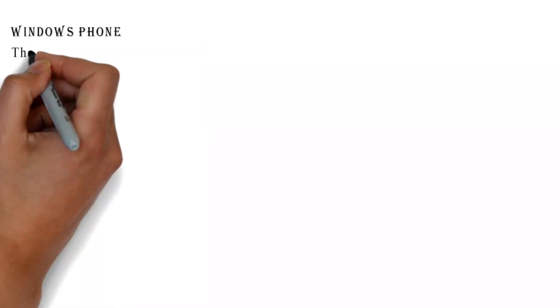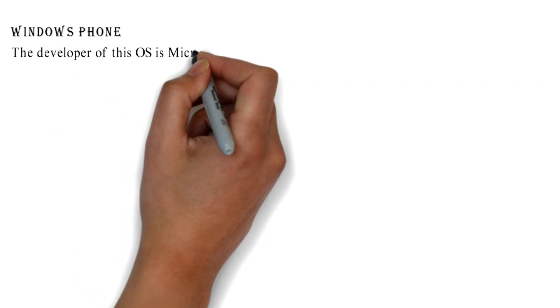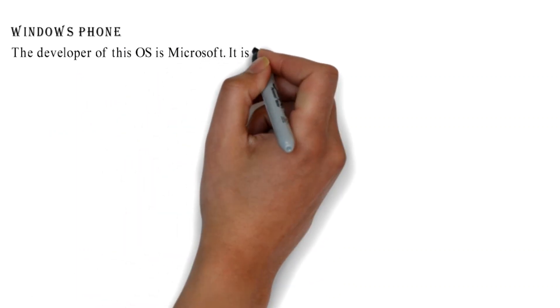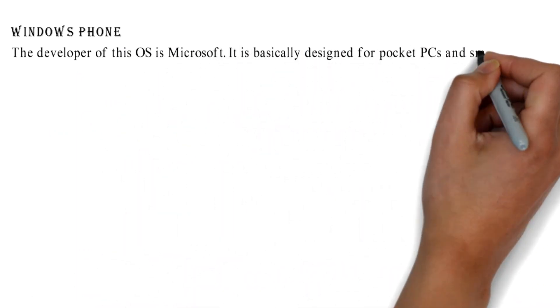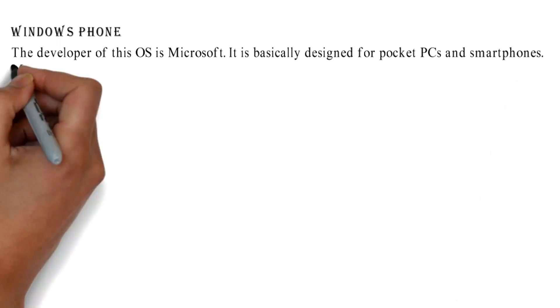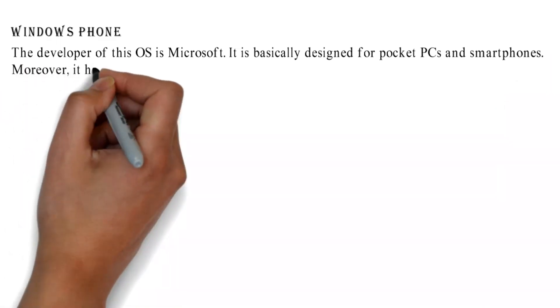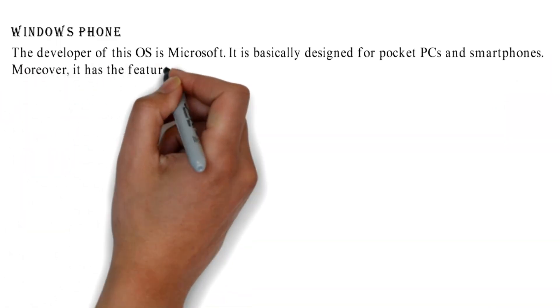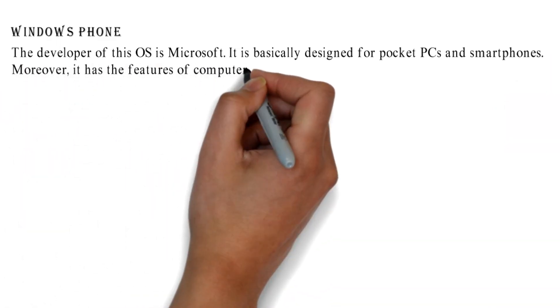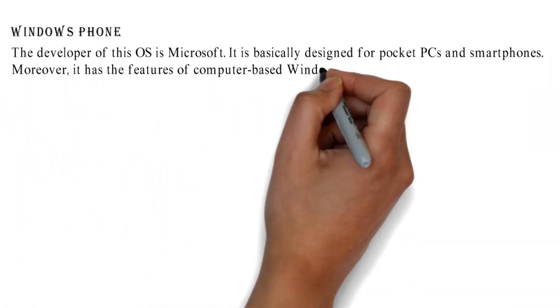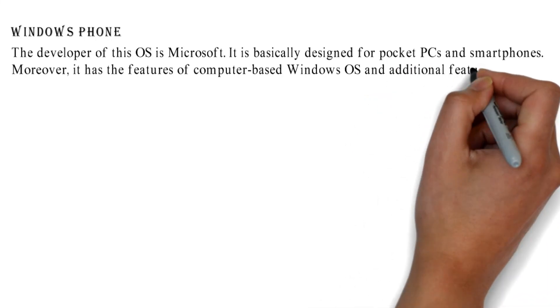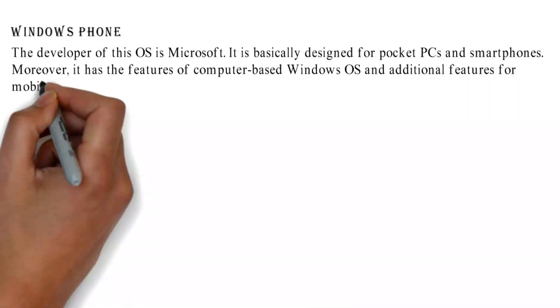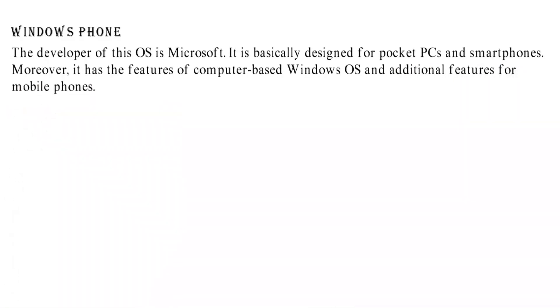Windows Phone is a mobile operating system developed by Microsoft. It is basically designed for pocket PCs and smartphones. It has the features of computer-based Windows OS along with additional features for mobile phones.